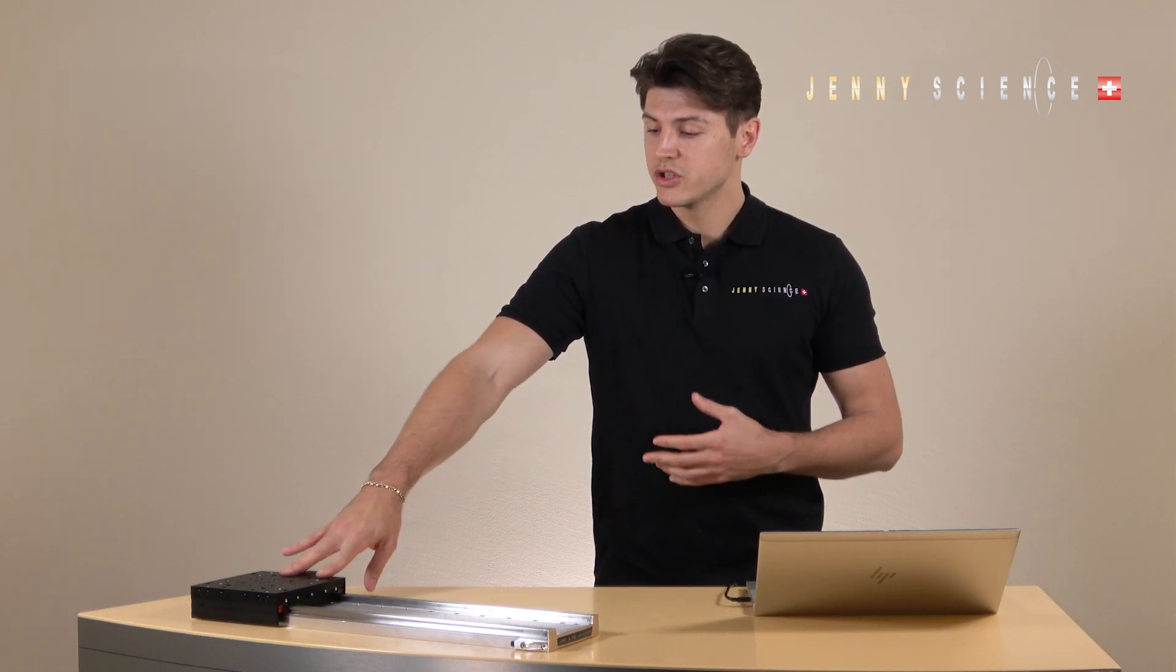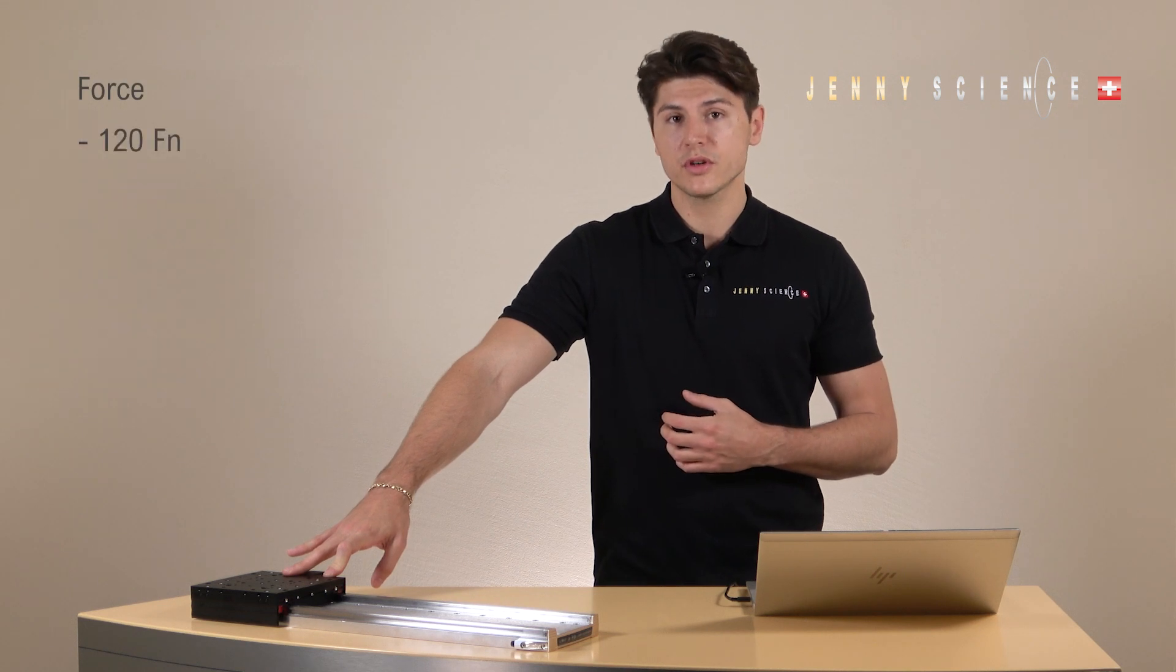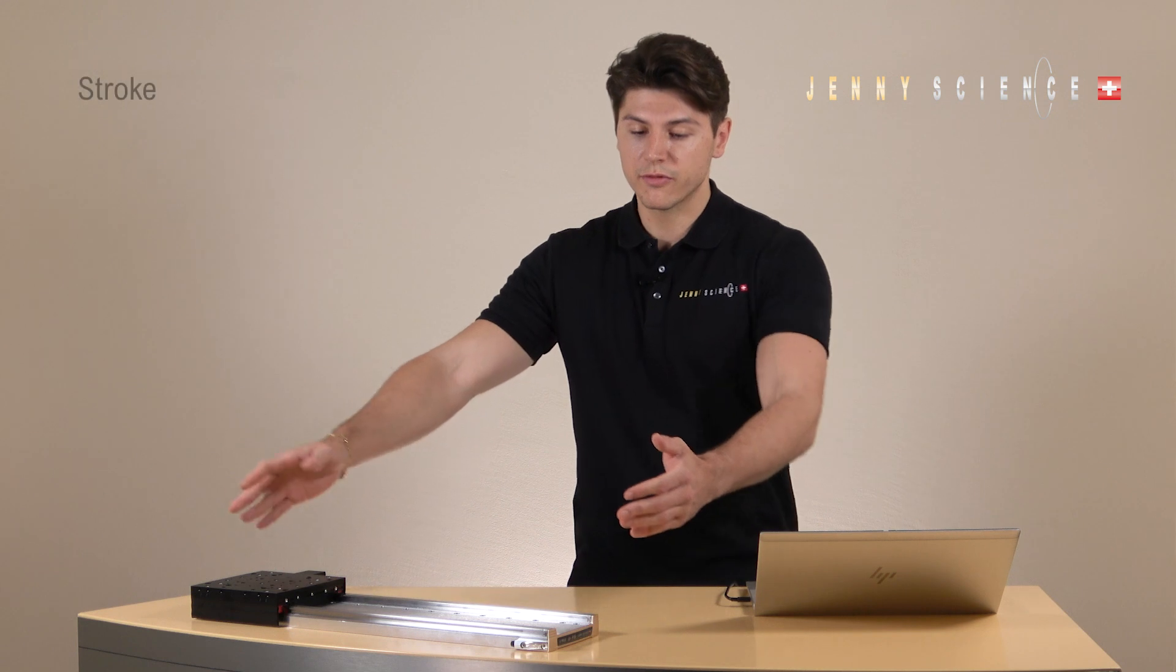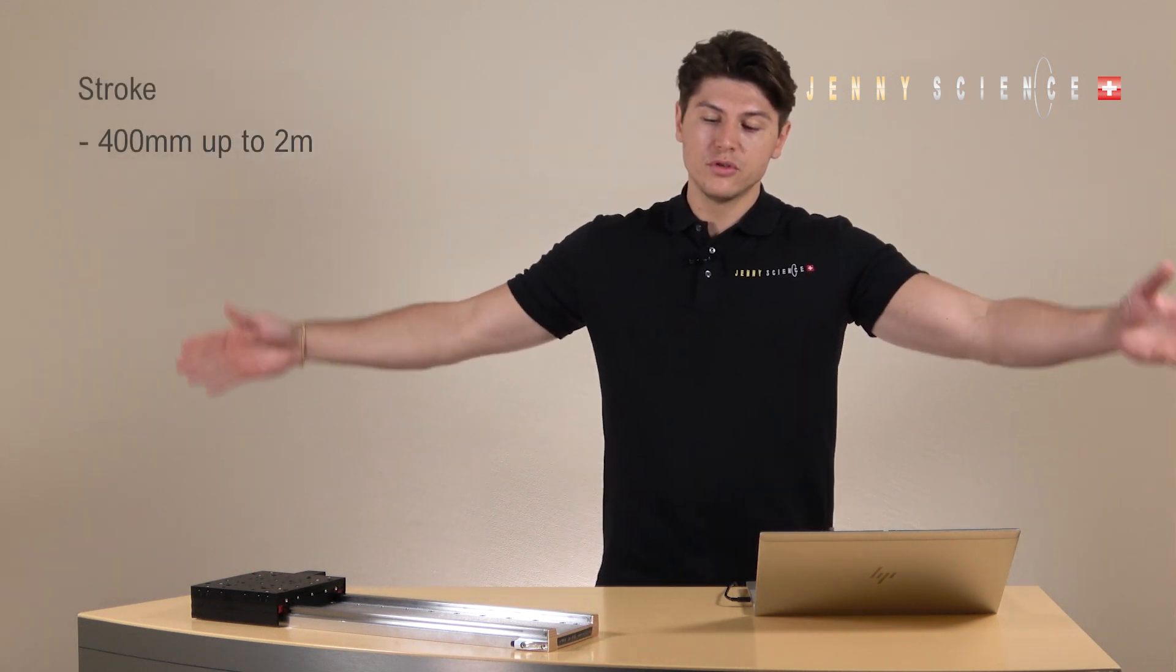First of all, the Linux LXS F120 has a new motor inside which allows you to have 120 N nominal force as well as 300 N peak force. The strokes go from 400 mm up to 2 meters.